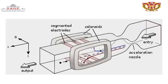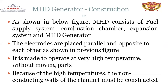In the fundamental diagram of the MHD generator: ionized gas enters and passes through an accelerating nozzle which increases its velocity, then passes through the circuit where voltage output is produced. Segmented electrodes are connected between the two dissimilar materials, and solenoids are placed on the top sides. The MHD system consists of a fuel supply system, combustion chamber, and electrodes placed parallel and opposite to each other as shown in the figure.